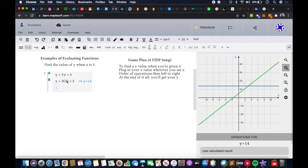So right here we see a parentheses, and whenever there's a number next to a parentheses, that is the same as multiplication. So let us multiply 3 times 3. So we have y equals 9 plus 5.